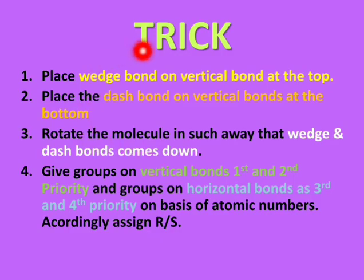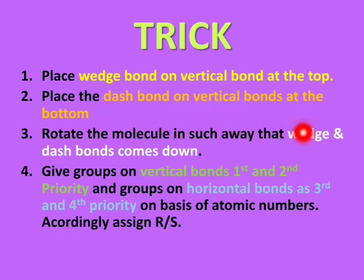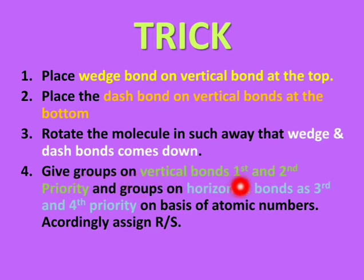There is a beautiful trick to solve this problem much faster while solving questions for competitive examinations. What you have to do is: the group present at the wedge bond you have to put on the vertical bond at the top, and the group which is present on the dash bond you have to put on the vertical bond at the bottom. Then you have to rotate the molecule in such a way that the wedge and the dash bonds come down, and then you assign priority to the vertical bonds as the first and second priority, and the groups present on the horizontal bond as the third and fourth priority. Then you can check accordingly whether it is R or S.